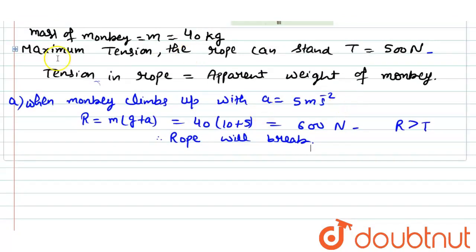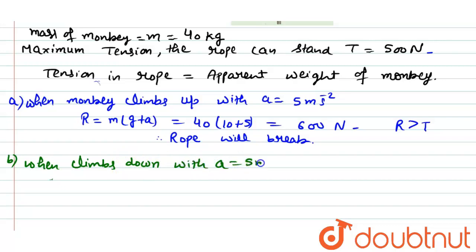In the next part B, when monkey climbs down with same acceleration, then R will be M into G minus A, that is equal to 40 into 10 minus 5, so it will be 200 N.